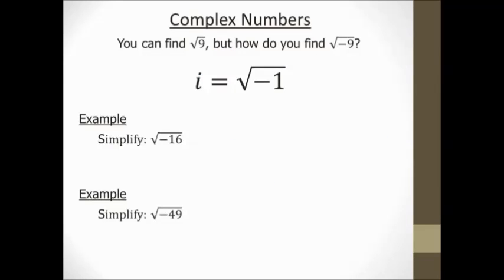So the way we're going to take the square root of a negative number is by using the letter i. i is going to be equal to the square root of negative 1. You can't take the square root of negative 1. You just saw that. But we're going to use i to stand for the square root of negative 1.